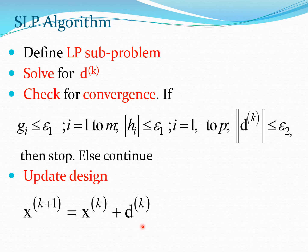A key trick in sequential linear programming is to progressively relax the move limits as you proceed. When k is small, the move limits are tight. As you become more confident of the method's progress, you start relaxing the move limits, which helps you converge to a solution.